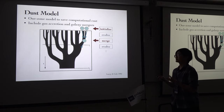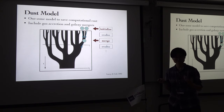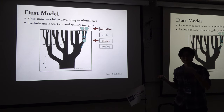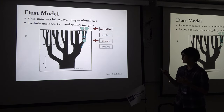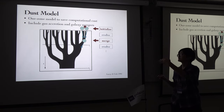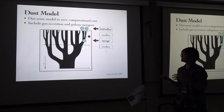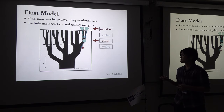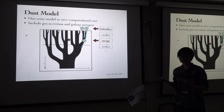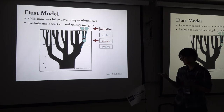By doing so, we can include gas accretion and galaxy mergers in our model. The idea is that we initialize our galaxies at the high-redshift end of the merger tree, then evolve each galaxy along the tree, merge them, and merge the dust size distributions weighted by their gas mass, and evolve them until they reach redshift zero.